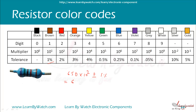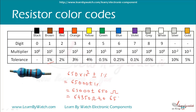So the value is 65000 ohm plus or minus 1 percent. 1 percent of 65000 is 650. So its value will lie from 64350 ohm to 65650 ohm.